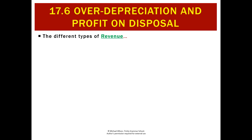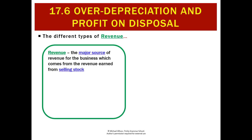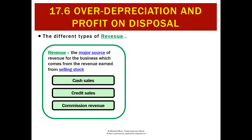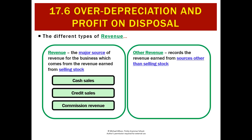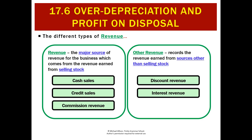Just to recap why: there are two categories of revenue. There's revenue which is the major source — from providing goods and services, selling stock — that's your cash sales, credit sales, and commission revenue. Then you've got other revenue: any revenue from a source other than selling stock, such as discounts received, interest revenue, and from now on we'll add profit on disposal of a non-current asset.